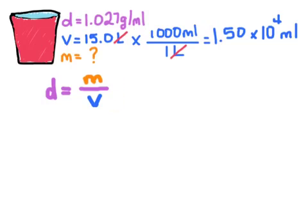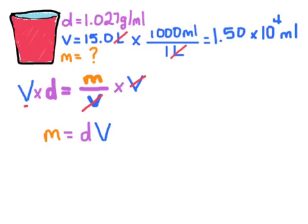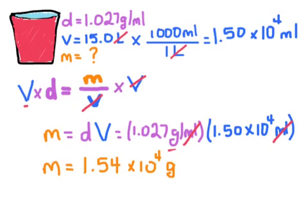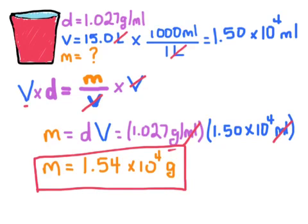Now that we have like units, let's rearrange our equation so that mass is isolated on one side. To do that, I'll multiply both sides by V to move volume to the other side of the equation. Volume cancels on the right side and is left on the left side. So mass is equal to density times volume. Plugging in the numbers, the milliliters cancel and we're left with grams. Our final answer is 1.54 × 10⁴ grams. We also have the correct units and the correct number of significant figures — 3 significant figures.